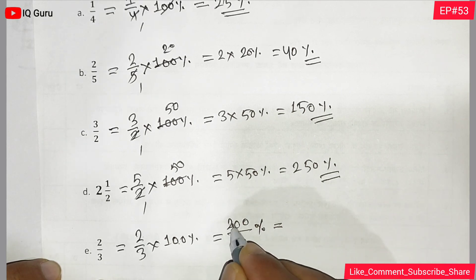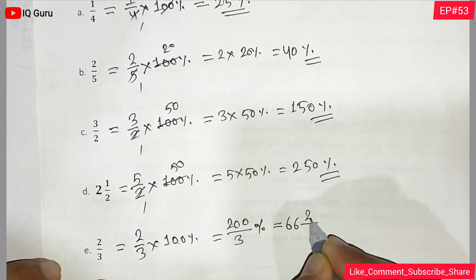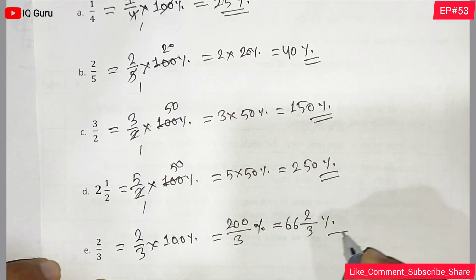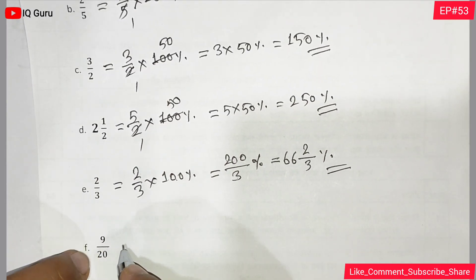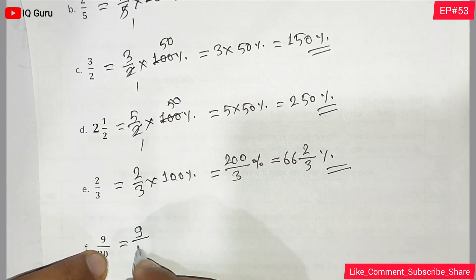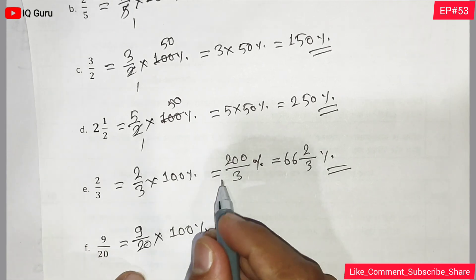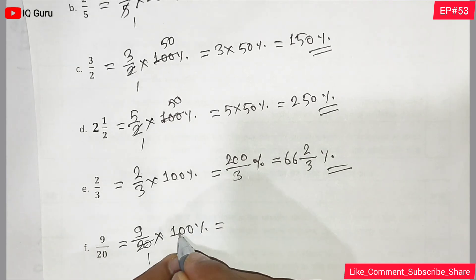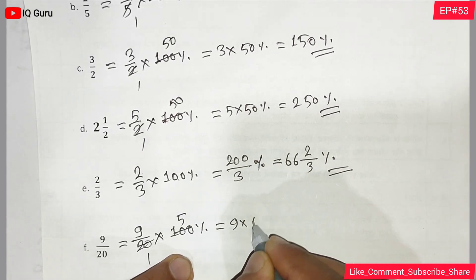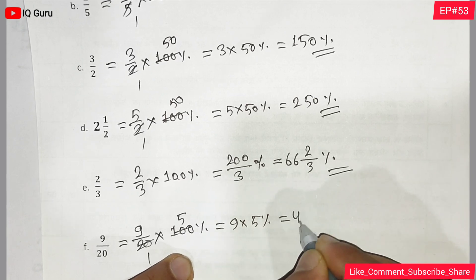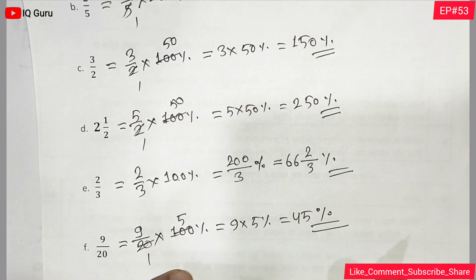For question f: 9 by 20 into 100 percent equals 45 percent.